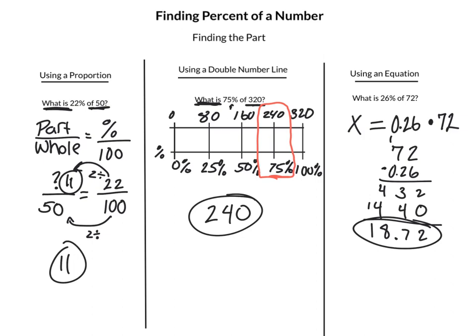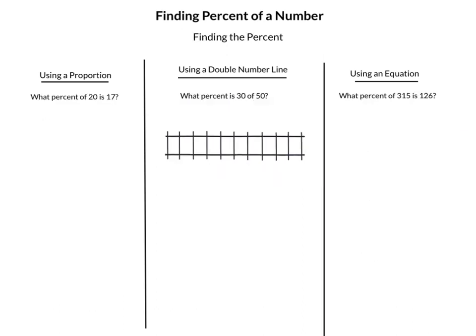So if we're setting up this equation, we know that the part is equal to the percent as a decimal times the whole. So you can always use that equation right there. Now we're going to look at finding the percent if we're given the part and the whole.